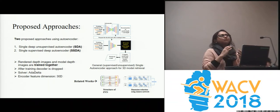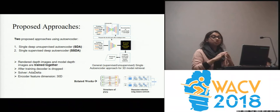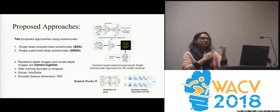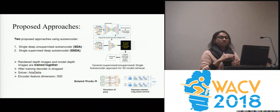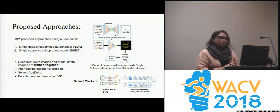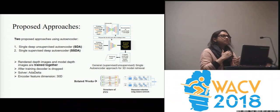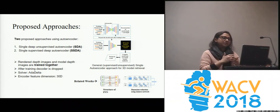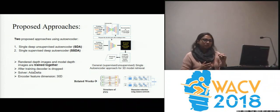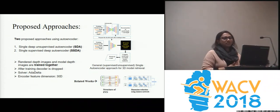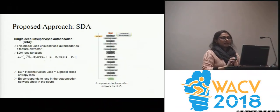Normally for cross-modal retrieval, people use pairwise networks, but ours uses a single network. This single network model trains real depth images and rendered depth images together. After training, we drop the decoder part and use the 30-dimensional autoencoder feature, with Adagrad as the solver.